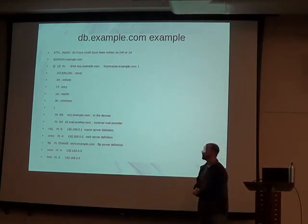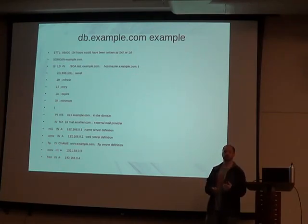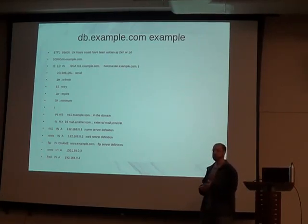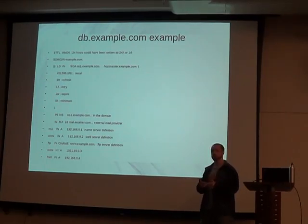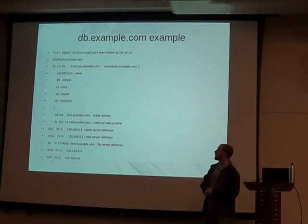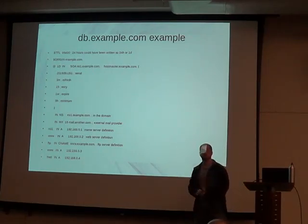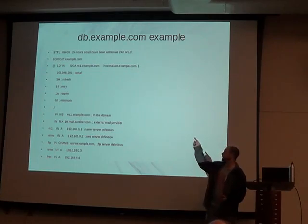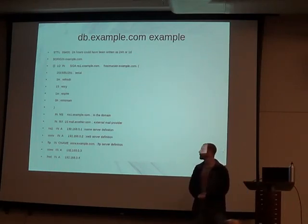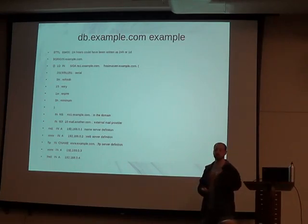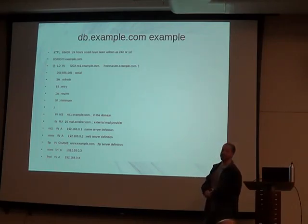The serial number is constantly incremented every time you change the file. When a slave server connects to a master, it looks at the serial number to determine whether or not it has the most recent copy. If its serial number is greater than or equal to the master's, it knows it doesn't have to change. A typical standard is to use the date of the change in reverse order: year, month, day, and then 01 or 00. As you make changes throughout the day, increment that last number. When the day changes, revert back to 01 and change the date — that way it's always incrementing.